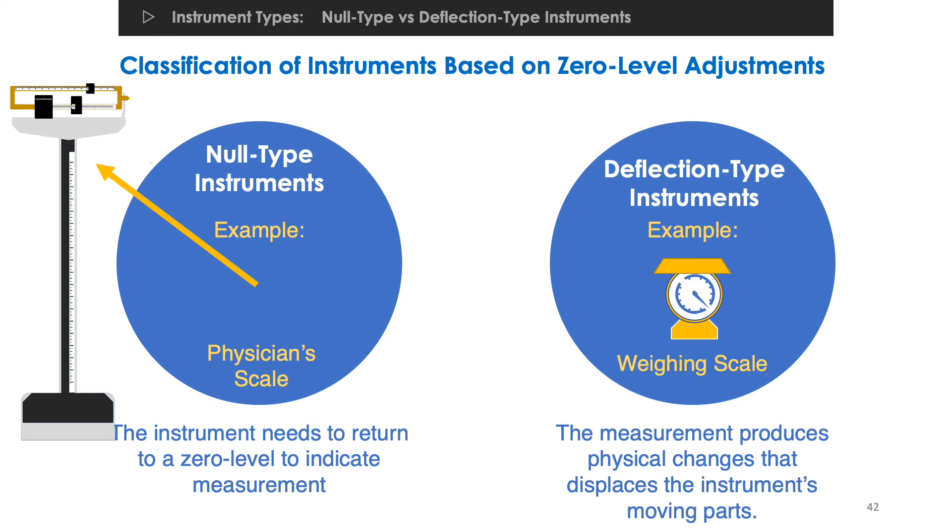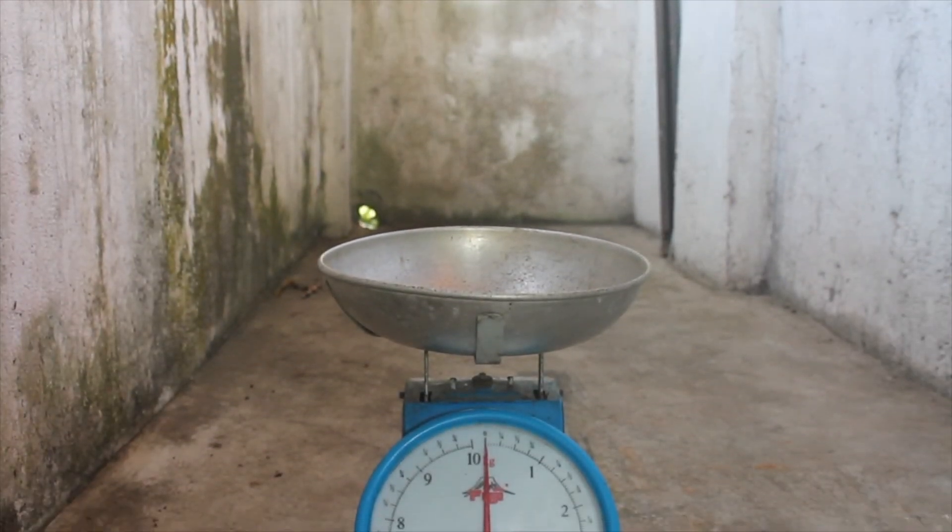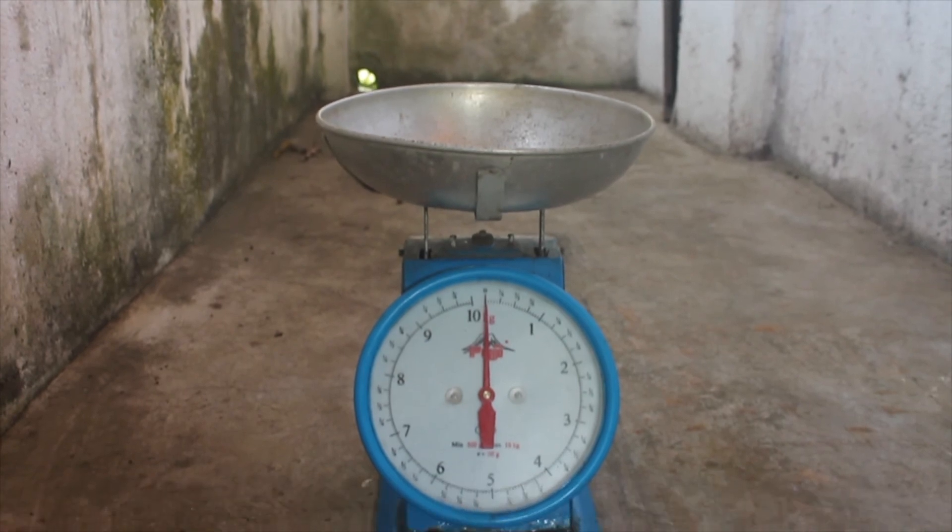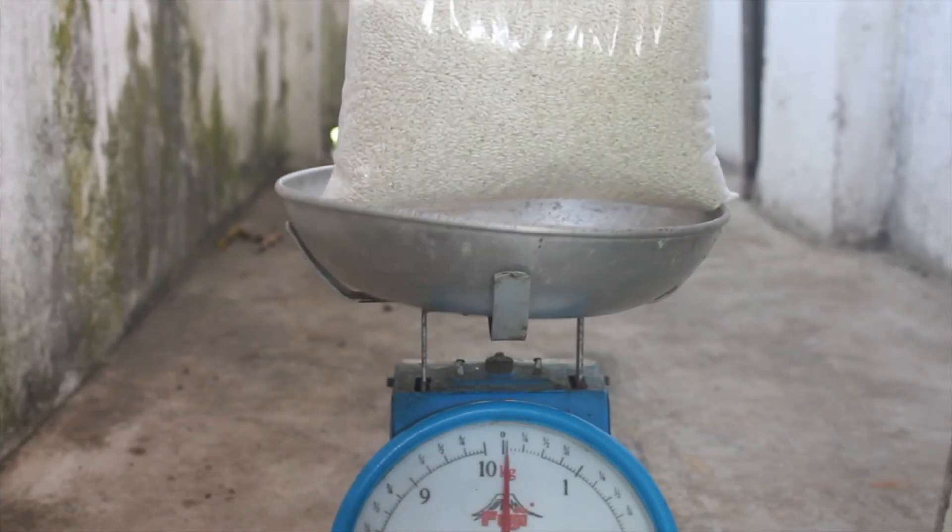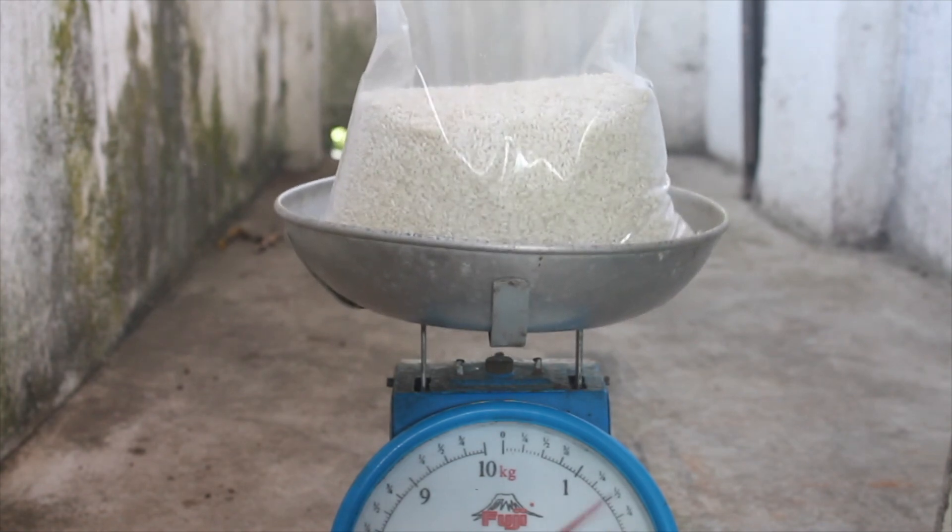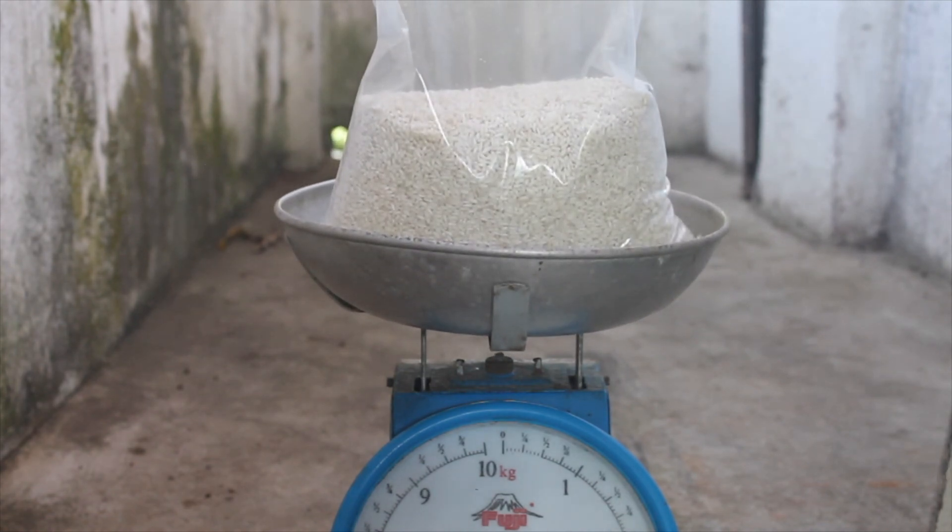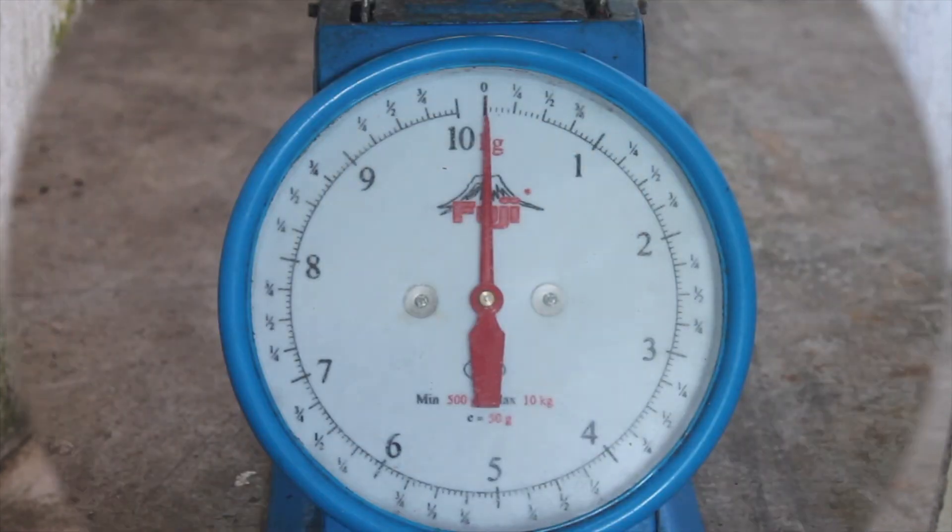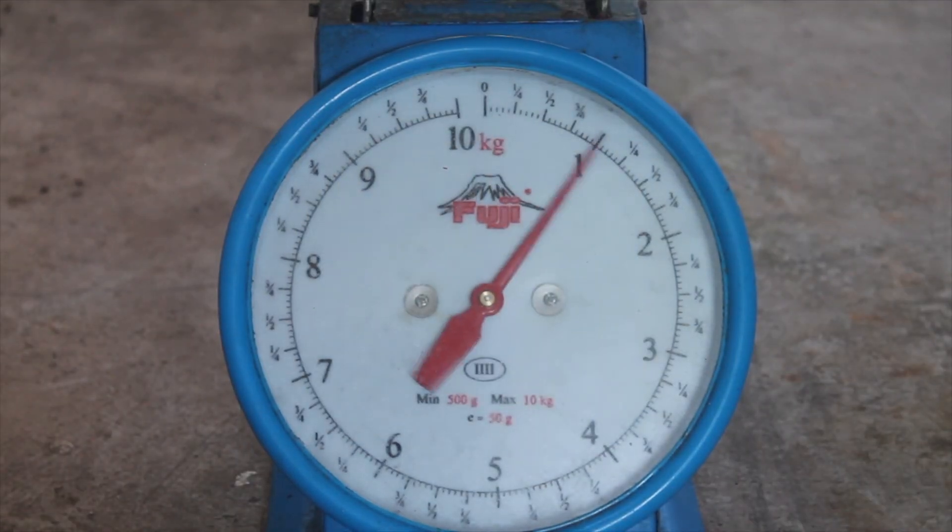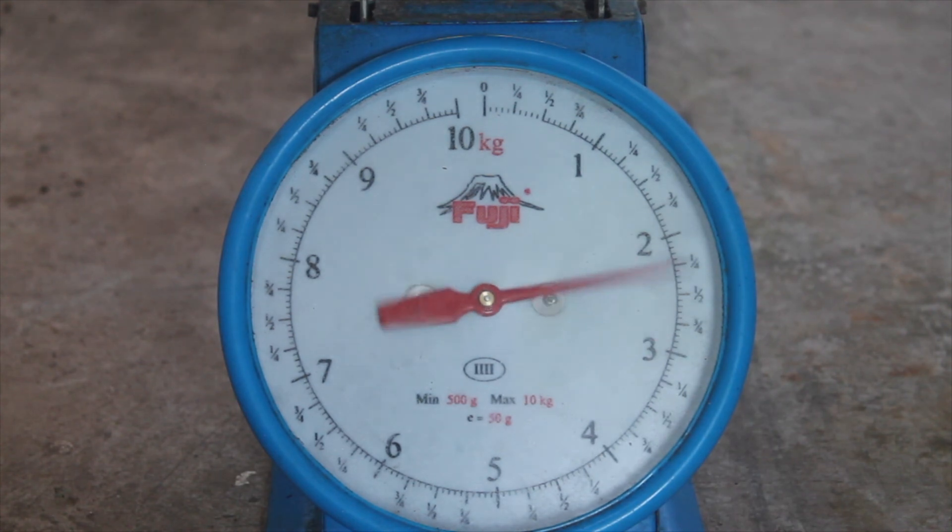Consider this demonstration. The moving pointer is set to zero when there's no load on the platform. But when an object is loaded on its platform, the object's weight causes the weighing scale's pointer to deflect on another position in such a way it points to the equivalent weight of the object. Apparently, this weighing scale has been calibrated well so that it displays accurate measurement.